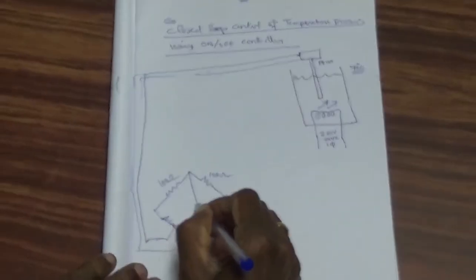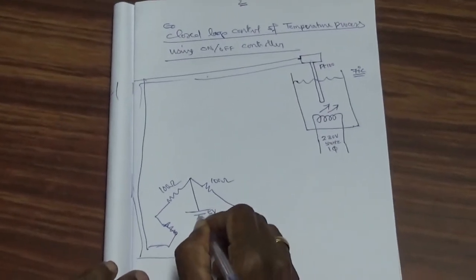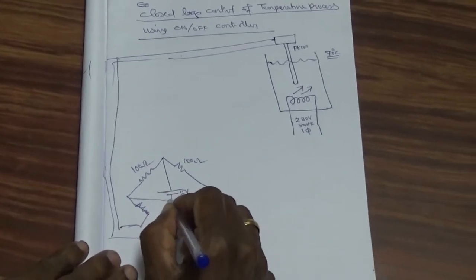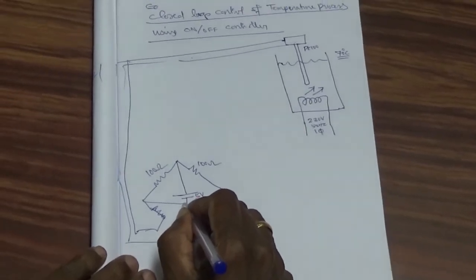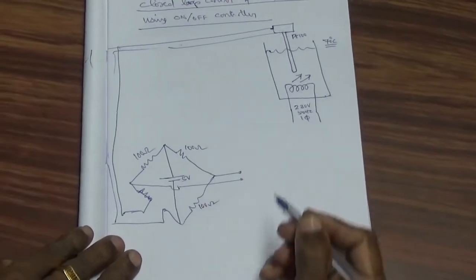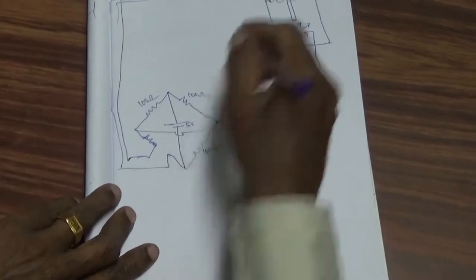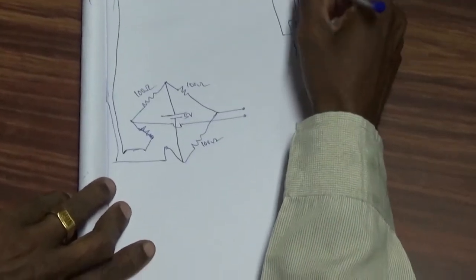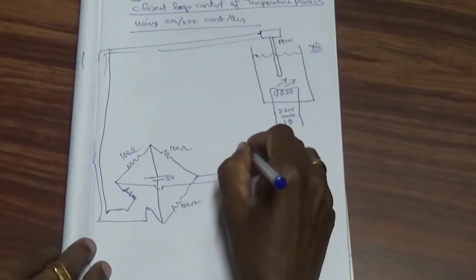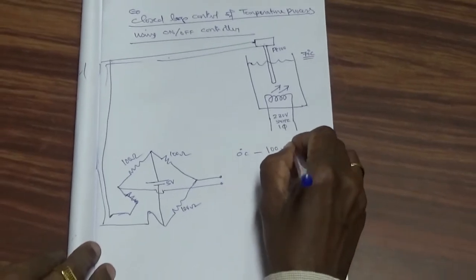A 5 volt DC power supply is connected to the bridge, and two terminals are taken across the opposite corners. The bridge output is available across these terminals. The resistance of PT-100 varies according to temperature. At 0 degrees centigrade, the resistance of this RTD is 100 ohms.